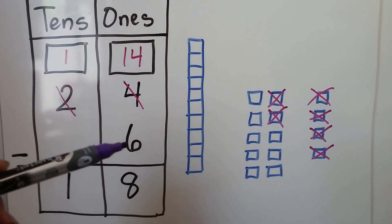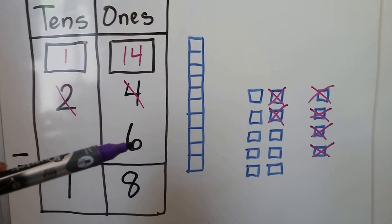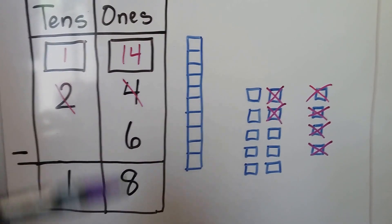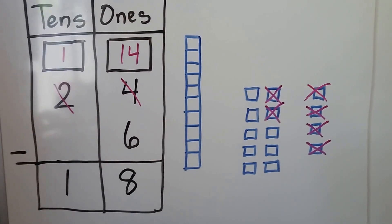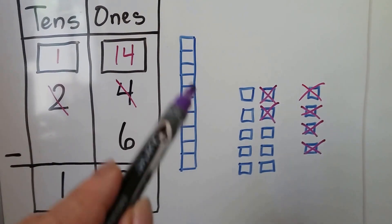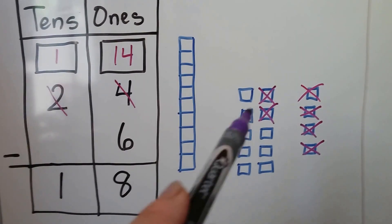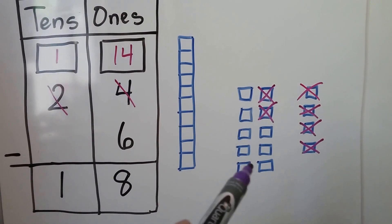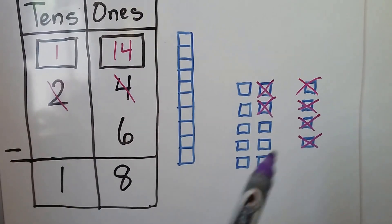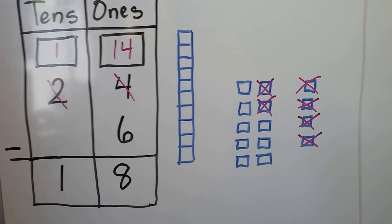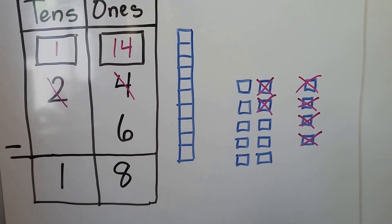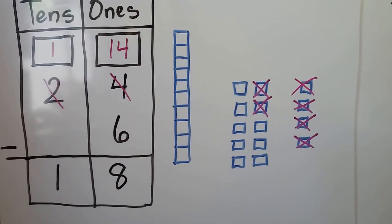We look at the six and see that it's larger than the four, so we need to regroup. So instead of two longs, we have one long and ten ones. That made fourteen ones and one ten. We took the six away and it left eighteen.